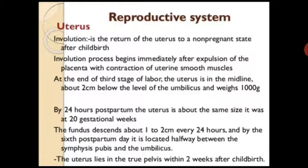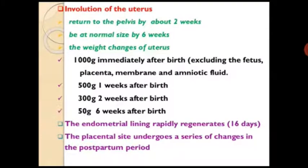By the 6th postpartum day the fundus is approximately halfway between the symphysis pubis and the umbilicus. The uterus returns to the pelvis by about 2 weeks and reaches a normal size by 6 weeks. Weight changes of the uterus: 1000 grams immediately after birth, 500 grams one week after birth, 300 grams two weeks after birth, and 50 grams at six weeks after birth.